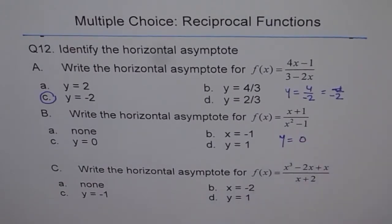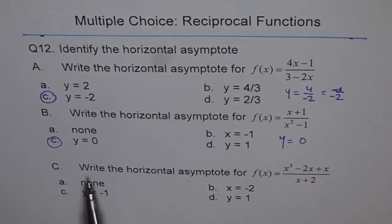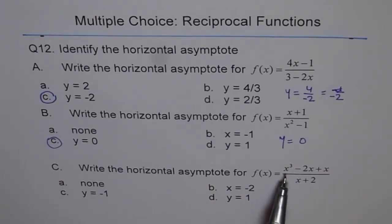Part C: write the horizontal asymptote for f of x equals x cubed minus 2x plus x divided by x plus 2. Degree of numerator is higher than the denominator, and therefore we do not have any horizontal asymptote.